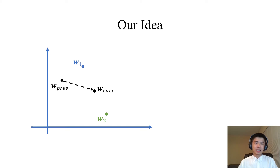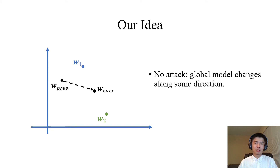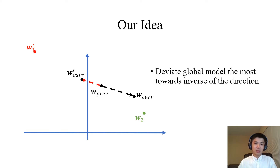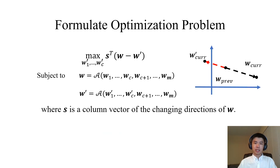The arrow indicates the direction that the global model changes, which is supposed to reduce the classification error rate. When an attacker is present — assuming the attacker controls worker 1 — instead of sending W1 to the master, the attacker will manipulate the local model to be W1_prime, such that the aggregated result becomes W_current_prime. The global model is deviated the most towards the inverse of the benign direction. Formally, we can formulate our idea as the following optimization problem.